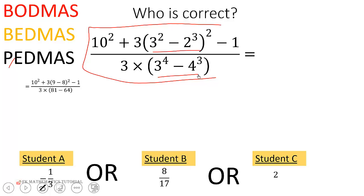So 3 squared is 9 and 2 cubed is 8, and 3 to the exponent 4 is 81 and 4 cubed is 64.